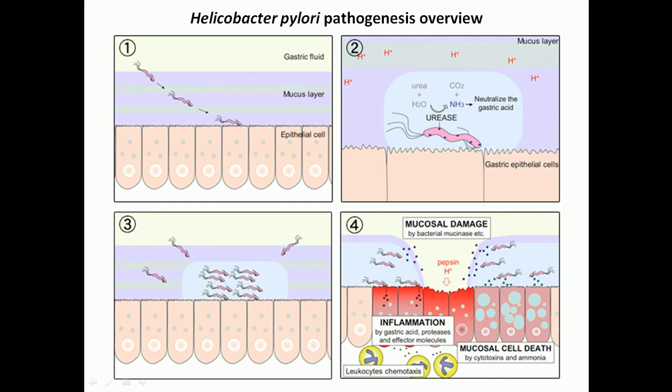In this picture we'll be talking about the Helicobacter pylori pathogenesis and the overview of this process. There are four different process sections: first is the adhesion of Helicobacter pylori to the host cell; second is minimizing the acid content of the stomach — that's the most important and unique point; third is the colonization of Helicobacter pylori; and fourth is the degradation of the epithelial cell of the stomach lining.